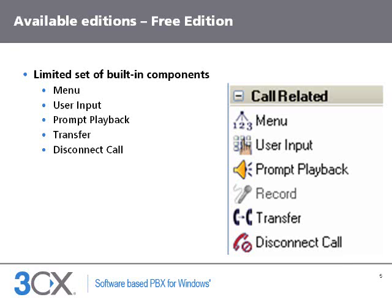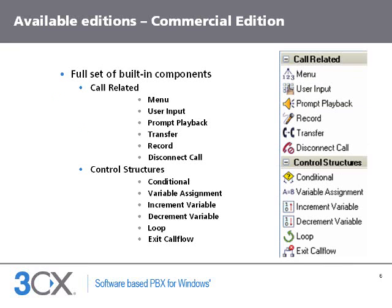Any other component will be disabled in the toolbox. The commercial edition adds more advanced components. The record component allows recording audio from the user, which can be saved to a file or played back again. The conditional component allows selecting one or multiple branches depending on runtime conditions. The variable assignment, increment variable and decrement variable components allow changing the values of variables during execution. The loop component allows executing a set of components multiple times while a condition is met. The exit call flow component is used to completely finalize the call flow execution.